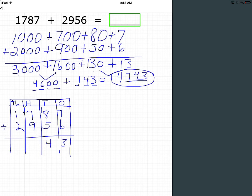Then add the hundreds. 1 plus 9 is 10, plus 7 is 17. Again regroup. 7 hundreds and 1 thousand.